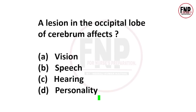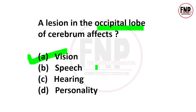हमारे brain का cerebrum वाला हिस्सा अलग-अलग lobes में divided रहता है और हर lobe का एक विशेष function होता है. अगर किसी client के occipital lobe में injury हो या lesion बन जाए, तो देखने में दिक्कत आ सकती है. हमारे skull के posterior lower part को occipital lobe कहते हैं, जिसमें visual centers पाए जाते हैं. तो अगर इस area में दिक्कत आती है तो vision प्रभावित होता है.